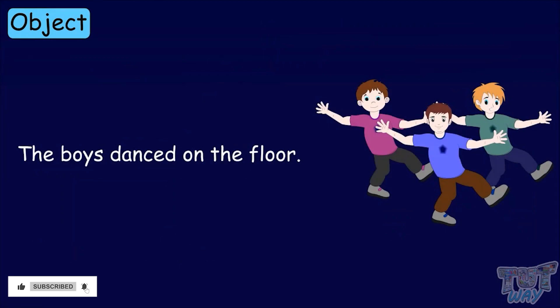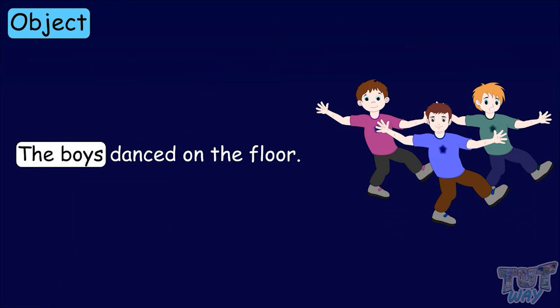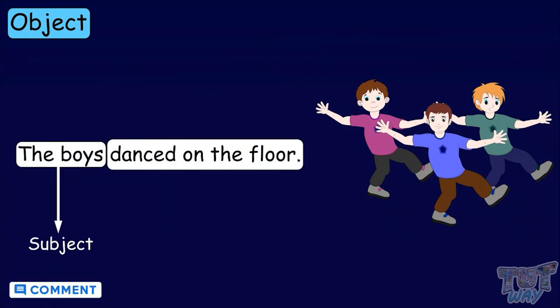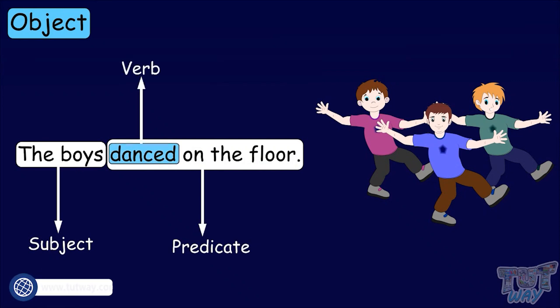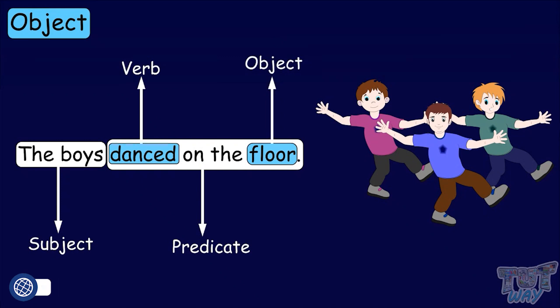The boys danced on the floor. In this sentence, the boys is the subject. Danced on the floor is the predicate. Danced is the verb, and floor is the object, as the action of dancing is being performed in the sentence.